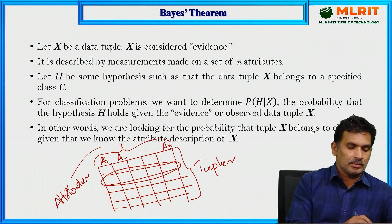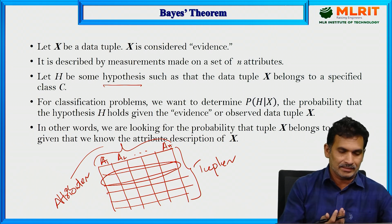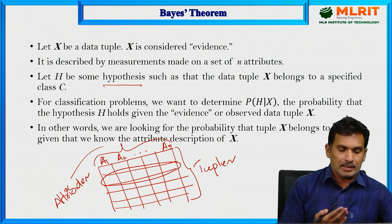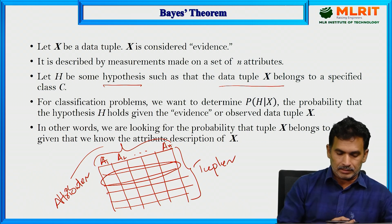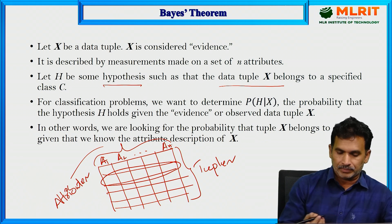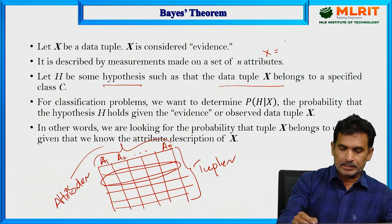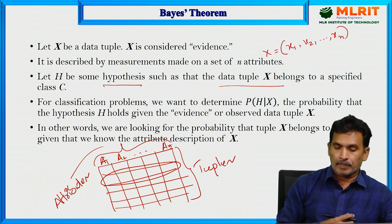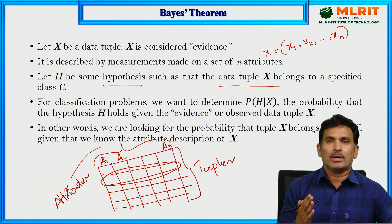Let H be the hypothesis such that the data tuple X belongs to a specified class. The basic objective of Bayes' theorem is to predict the class label of a particular data tuple. The data tuple X is represented as an N-dimensional vector with values X1, X2, ... X_N, corresponding to attributes A1, A2, A3, ... A_N respectively.